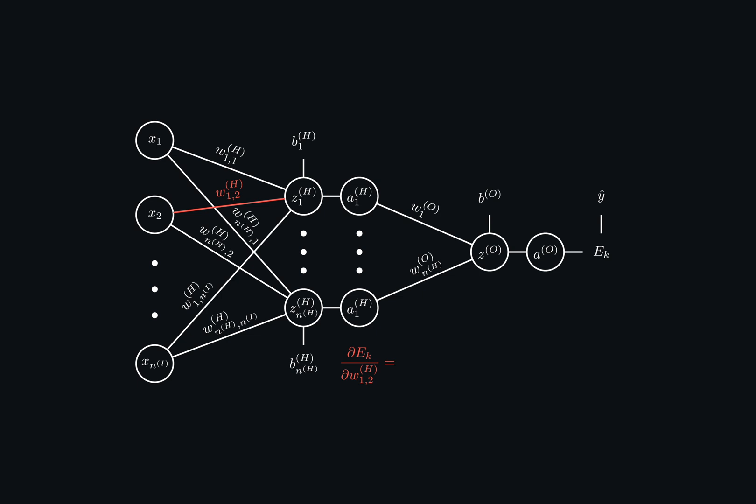z1 of a hidden layer depends on the weight, so let's write down the derivative of z1 with respect to this weight. Then a1 of the hidden layer depends on z1, so we need to write down the derivative of a1 with respect to z1. Then z of the output layer with respect to a1 of the hidden layer. Then a with respect to z. And finally the derivative of the error with respect to the output neuron's value.